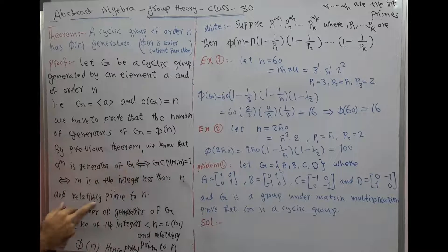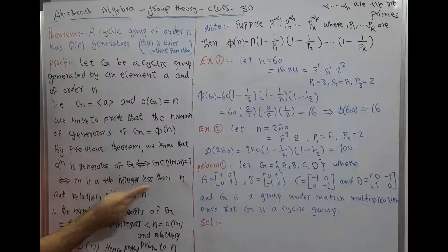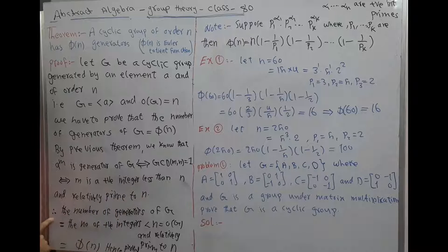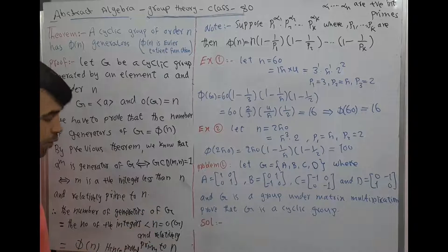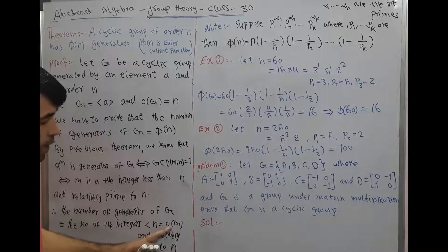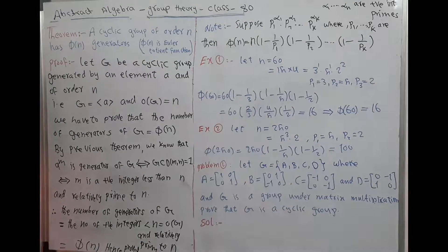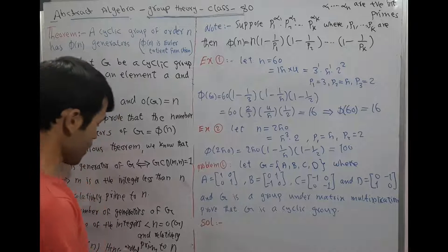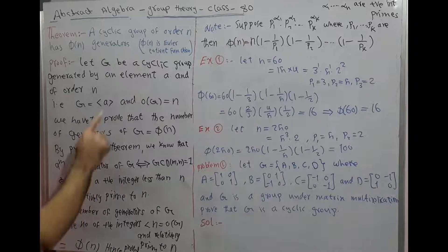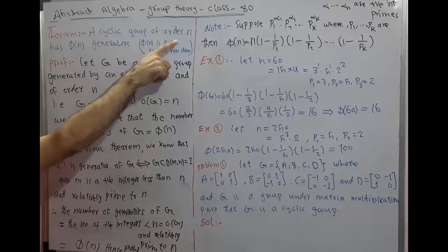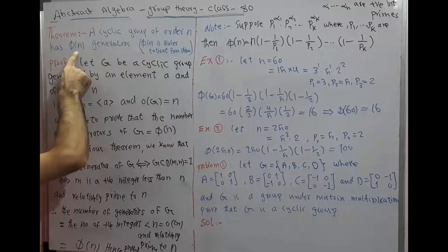m is a positive integer less than n and relatively prime to n. Therefore, the number of generators of G equals the number of positive integers less than n and relatively prime to n, which equals the Euler totient function φ(n). Hence the proof is complete.